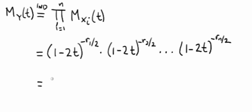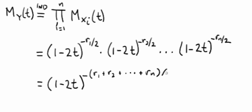Now all we need to do is a little bit of algebra. We get (1 minus 2t) to the negative (r sub 1 plus r sub 2 plus dot dot dot out to r sub n) all divided by 2. And this is true for t is less than 1 half.